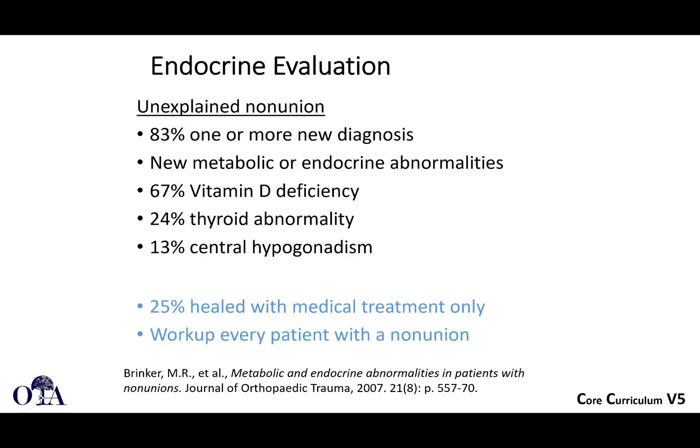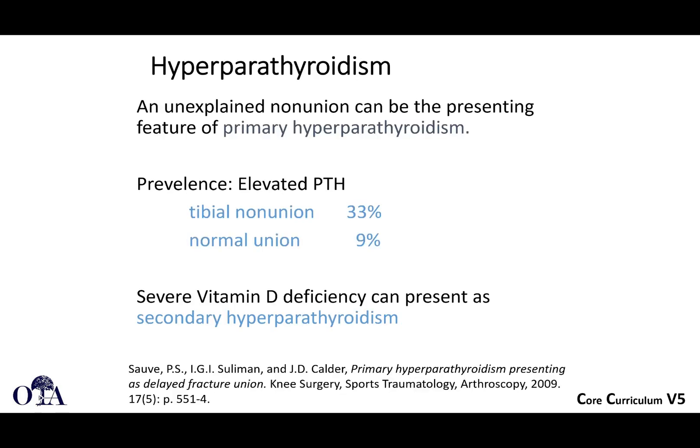An endocrine evaluation, if abnormalities are found, may be helpful because sometimes you have an unexplained non-union where the patient has a new endocrinologic diagnosis they were unaware of that declared itself through the non-union. Vitamin D deficiency, thyroid abnormalities, and central hypogonadism should be treated if discovered during your workup. In some patients, Dr. Brinker notes that 25% healed with medical treatment alone — so you should work these patients up and treat concomitantly.